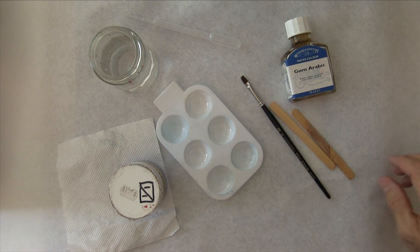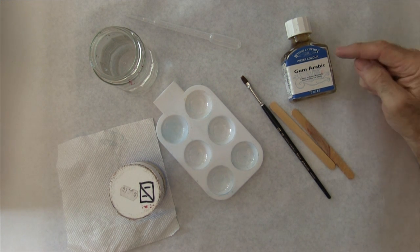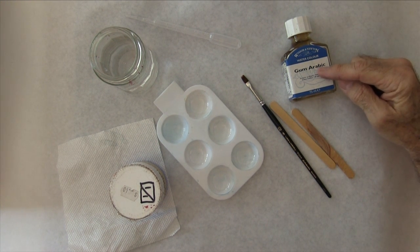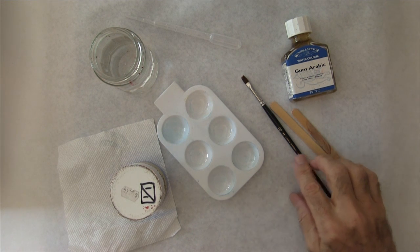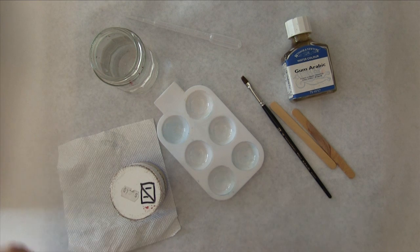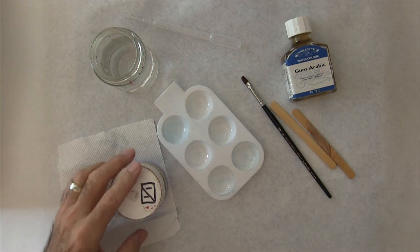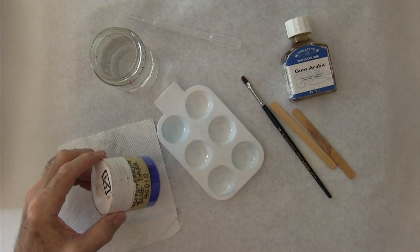Okay, so here's our setup right here today. First thing we have is the gum arabic over here. We have a couple of craft sticks, a mixing brush, our little six part mixing pan, some distilled water.